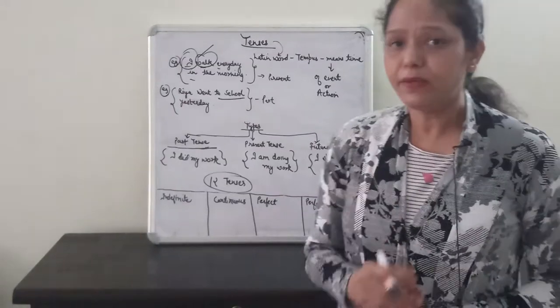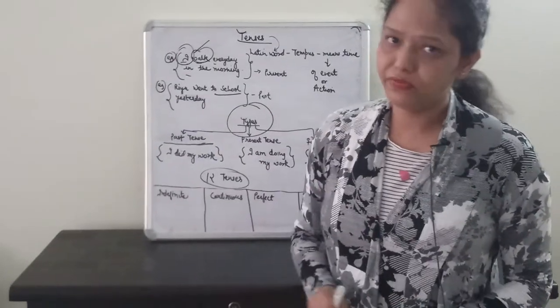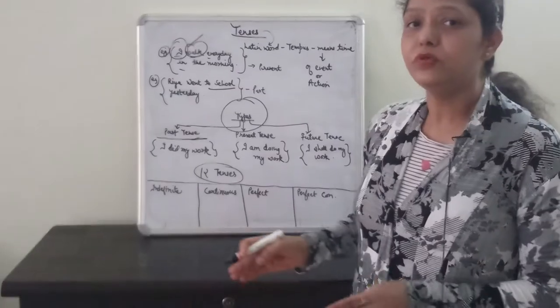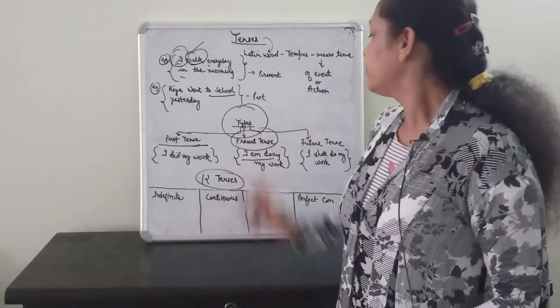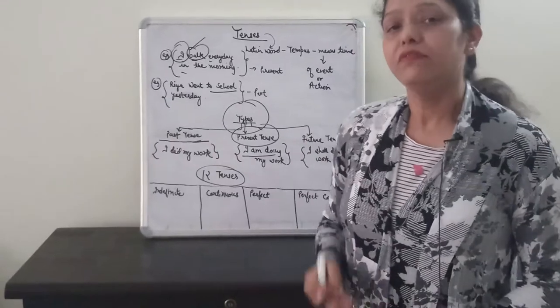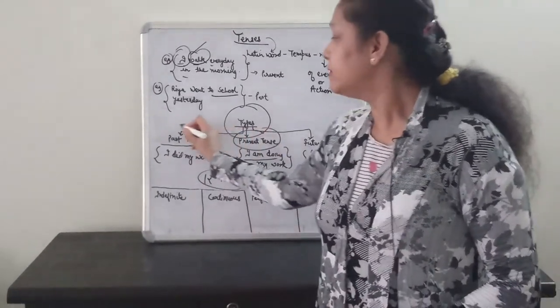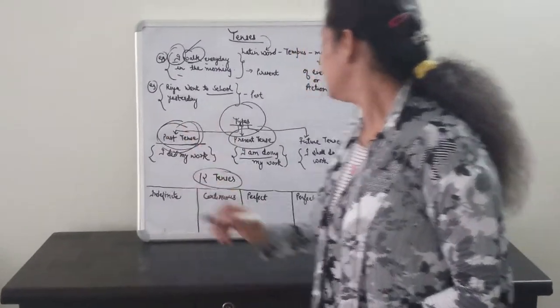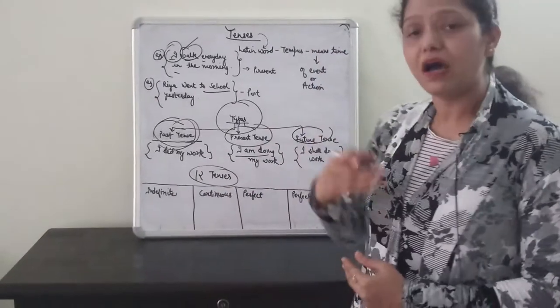Once again, if we talk about the types of tenses, we can see that basically there are three types of tenses. When the action is happening in the present time, then it is present tense. As we see here, I am doing my work, means the action is taking place in the present time. When the action takes place before the present time, then it is past tense. For example, I did my work. And sometimes the action may also take place after the present time, which is future tense.